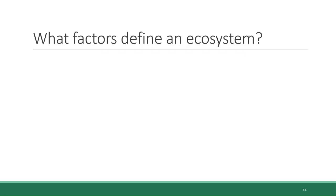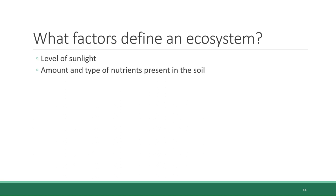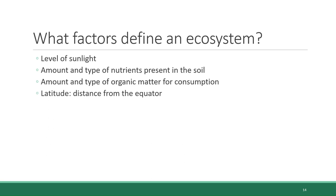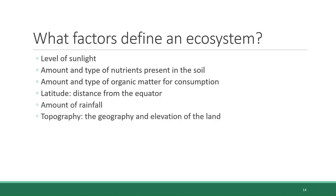Now, tackling the whole biosphere is a bit of a handful, so let's take one step back down the levels of organization and focus on ecosystems instead. The range of ecosystems on Earth is extremely diverse, and what life looks like in particular ecosystems depends upon several factors. These include how much sunlight a habitat gets, what kind of nutrients are present in the soil, how much organic matter there is for consumption, and what type. Another factor is latitude — the distance from the equator — as well as the amount of rainfall the ecosystem experiences, its elevation or topography, and finally its biodiversity: how many different species share the habitat, which can range from just a few species to thousands.